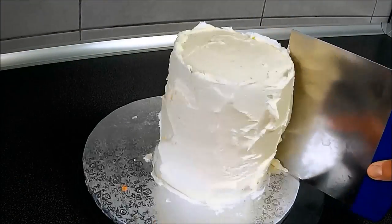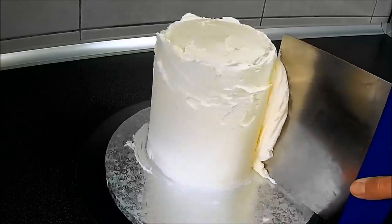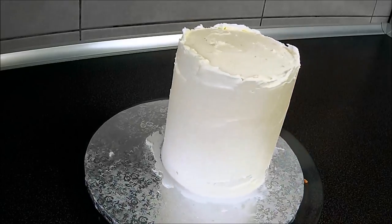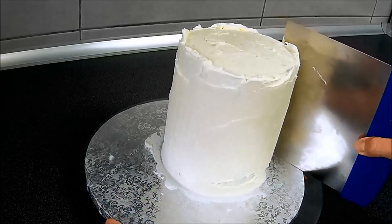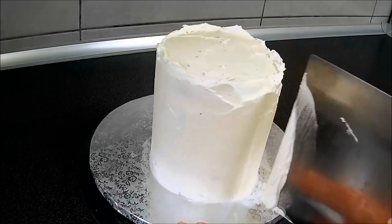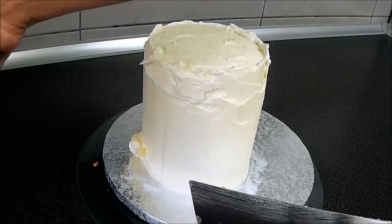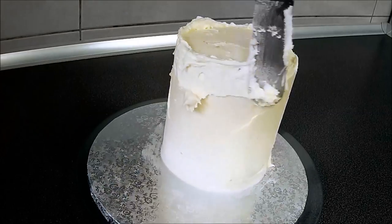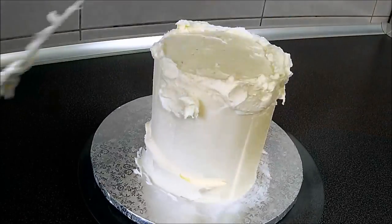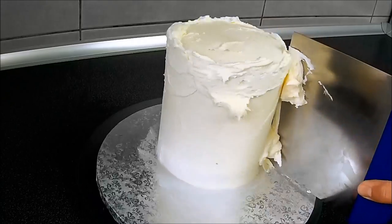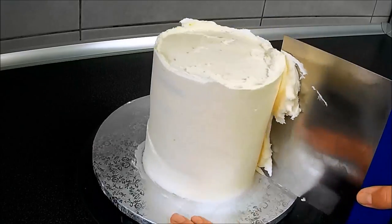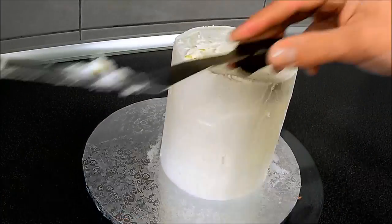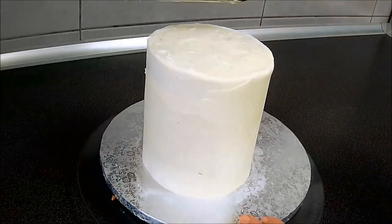Now I'm using a bench scraper to take away the excess buttercream, filling up gaps with more buttercream, and again smoothing the sides. Smoothing the top of the cake, and I'm going to put it back in the fridge for about 30 minutes or longer until the buttercream will be hard.